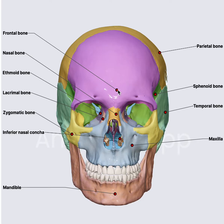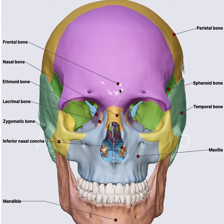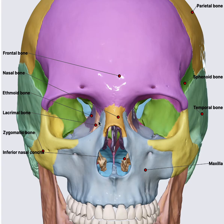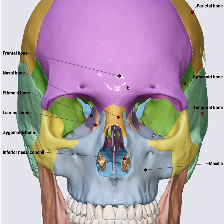The first bone we are going to look at is the frontal bone. As you can see, it forms the roof of the orbit — quite a big bone. From the surgical anatomy point of view, in cases of acute frontal sinusitis, we can get access to the frontal sinus by external trephine. That is, we make a hole here, go inside, give a wash, and relieve the bacterial load.